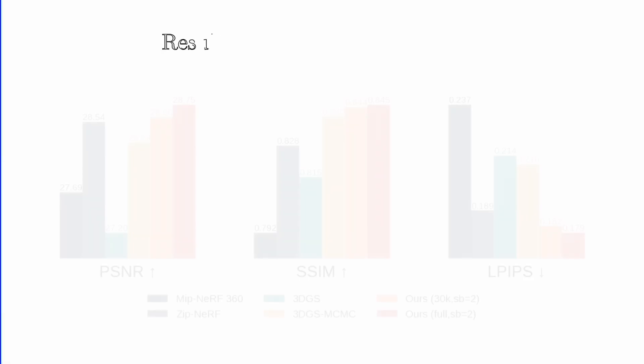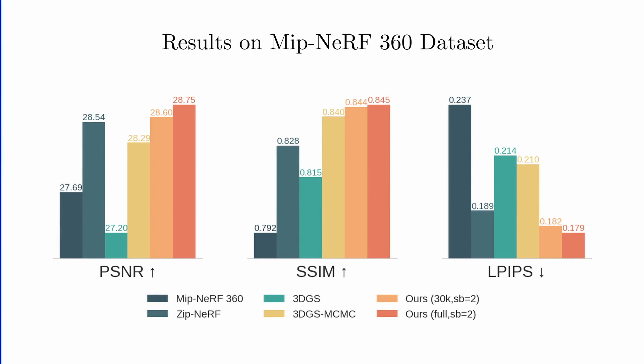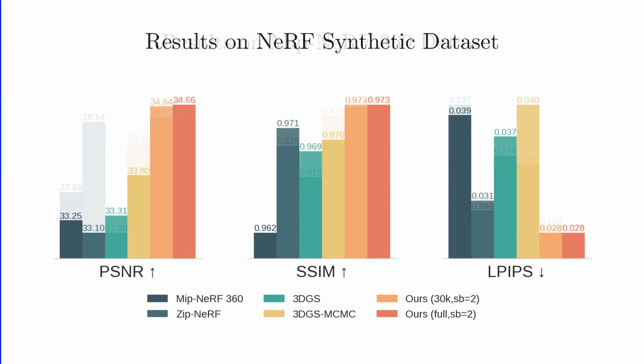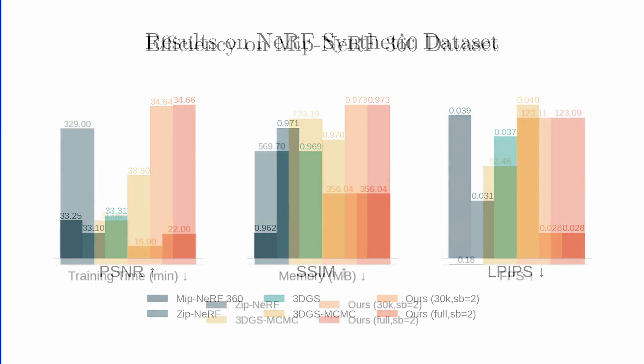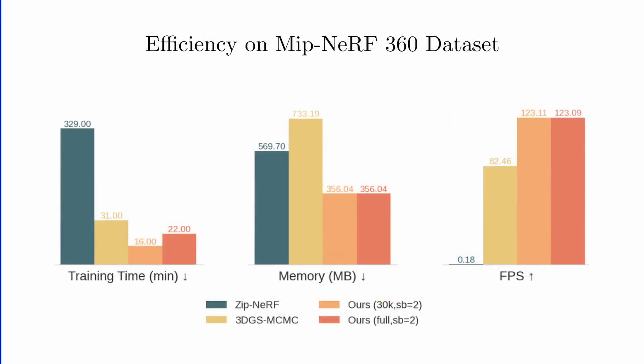These innovations enable our method to achieve state-of-the-art performance compared to both existing implicit and explicit novel view synthesis. Notably, DBS accomplishes this with less than half the memory and training time, and renders one-and-a-half times faster compared to Gaussian-based methods.